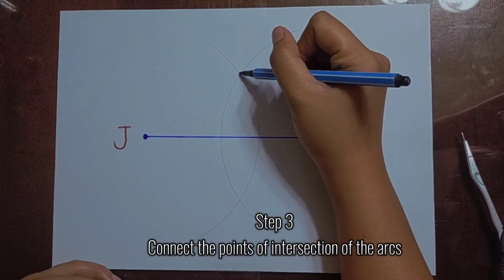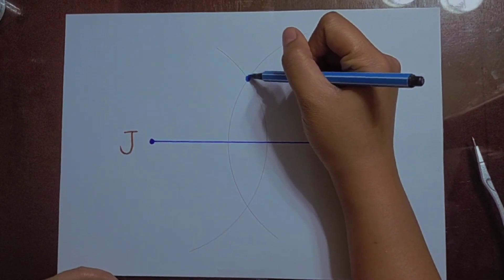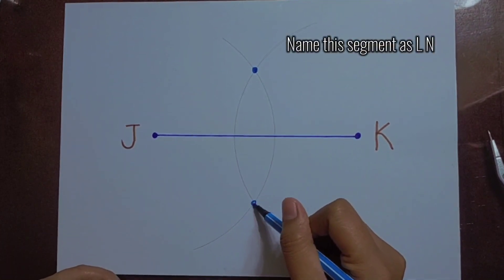Step 3. Connect the points of intersection of the arcs. Name this segment as LN.